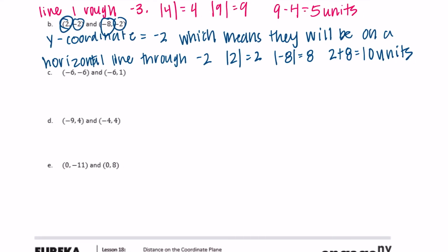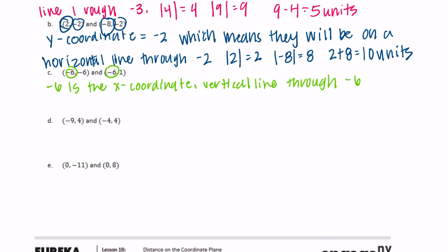For endpoints 6, negative 6 and negative 6, 1: they both have negative 6 as their x-coordinate, which means there will be a vertical line through negative 6. The absolute value of negative 6 is 6 and the absolute value of 1 is 1. They're on opposite sides of zero — negative 6 is to the left and 1 is to the right — so we add: 6 plus 1 equals 7 units apart.